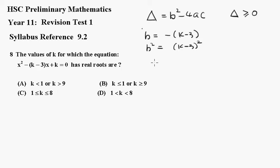And replacing all the others, we'll have the discriminant is equal to k minus 3 all squared, minus 4 times the a, which is just 1, times k, or 4k.